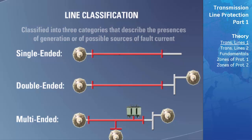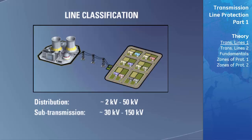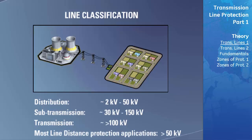The voltages used for transmission of power over transmission lines are split into three categories. These are distribution levels, which are in the range of 2 kilovolts to 50 kilovolts; sub-transmission levels, which are in the range of 30 kilovolts to 150 kilovolts; and transmission levels which are greater than 100 kilovolts. Most applications that use distance protection are 50 kilovolts or greater.